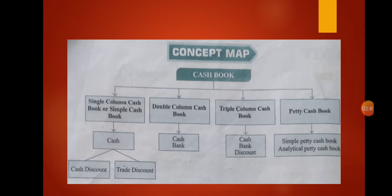Double column cash book. What do we mean by double column cash book? Double column cash book is a cash book with cash and discount columns. There are two columns — discount and cash — on both the debit and credit sides. The double column cash book is prepared on the lines of simple cash book, with only one additional column: a discount column on each side.